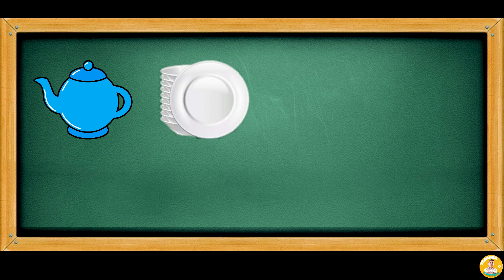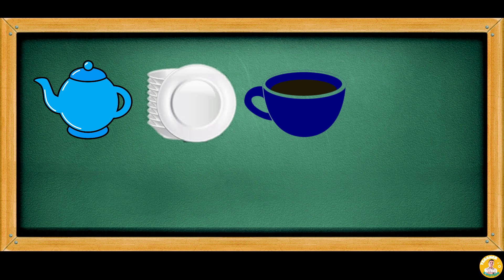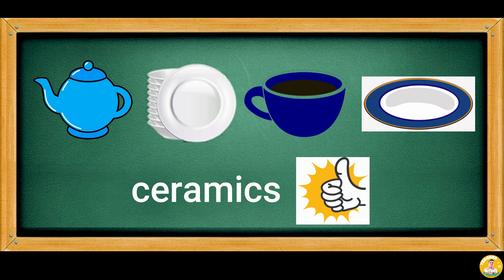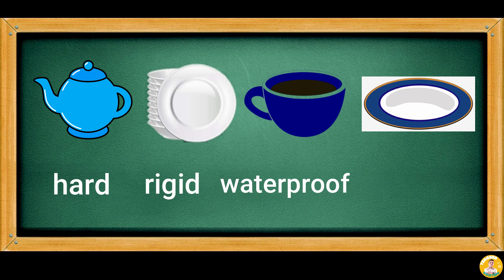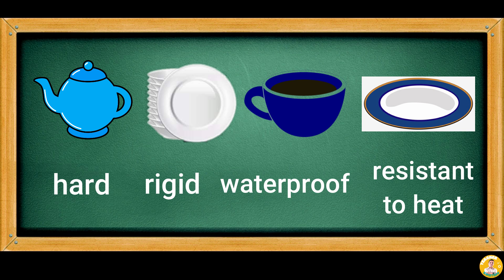Let's observe a teapot, plates, cups, and saucers. What characteristics do they share in common? If you say they are made up of ceramics, you are right. Each property shows that it is hard, rigid, waterproof, and resistant to heat. These properties make them a good material for holding hot liquids.